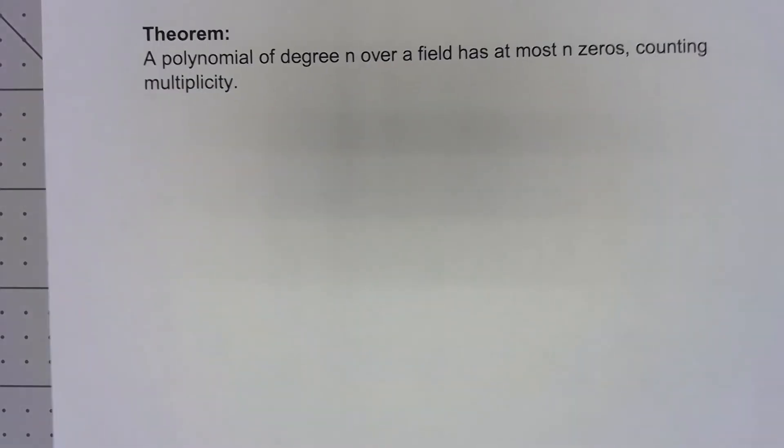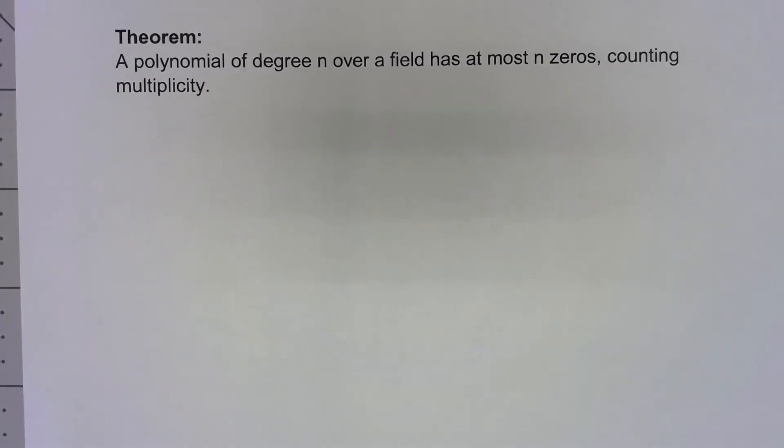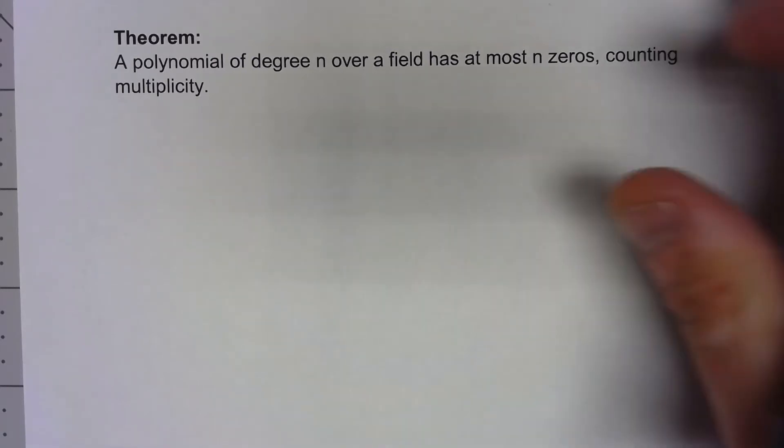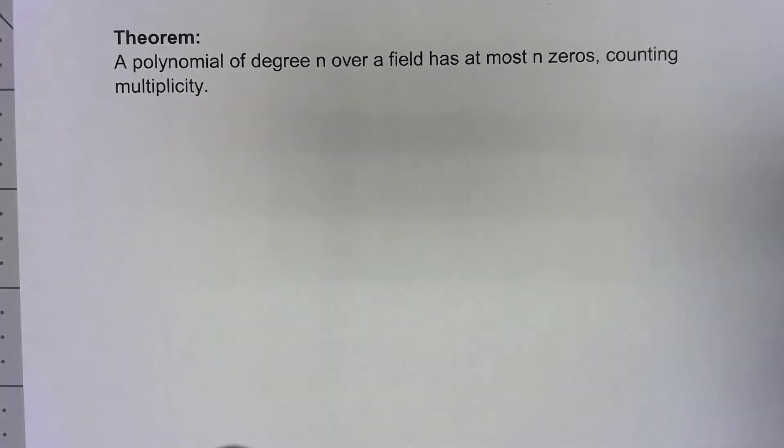Let's look at one more consequence of that division algorithm. A polynomial of degree n over a field has at most n zeros counting multiplicity. I'm not going to do a really formal proof but let me just kind of outline it a little bit.